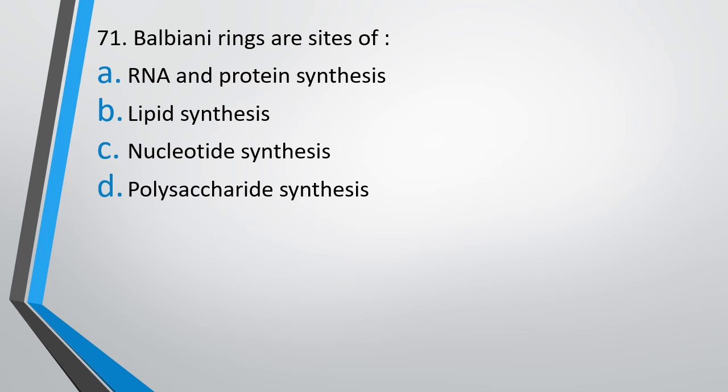Question No. 71. Balbiani rings are sites of: RNA and protein synthesis, lipid synthesis, nucleotide synthesis, or polysaccharide synthesis. The correct answer is option A, protein and RNA synthesis.